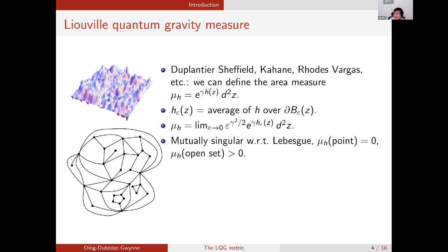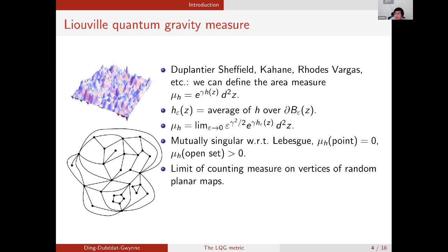If we replace h by the circle average process h_epsilon in the definition of the measure mu_h above, we obtain a well-defined random measure. If we normalize it by the expectation of the total measure, then in the scaling limit we obtain the LQG area measure mu_h. This LQG measure is an interesting random fractal measure: it is mutually singular with respect to the Lebesgue measure, assigns zero mass to any point, and assigns positive mass to any open set. Recalling connections with random planar maps, the LQG area measure should be the scaling limit of the counting measure on vertices of random planar maps — for example embedded via circle packing or Tutte embedding.